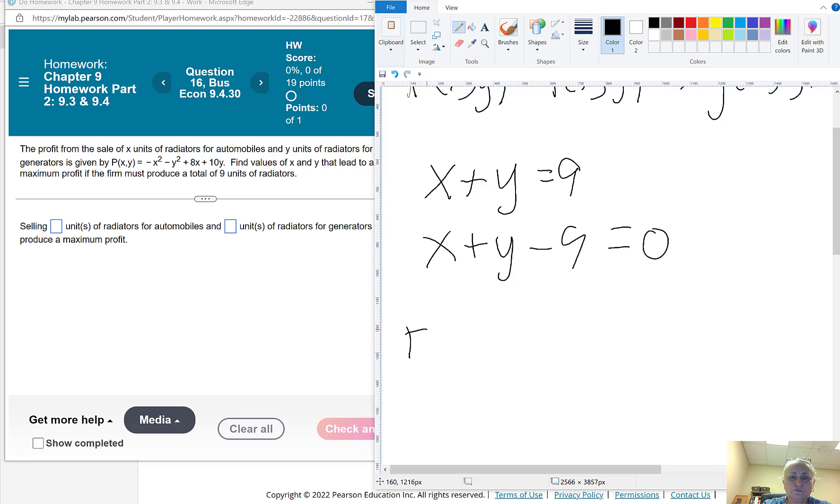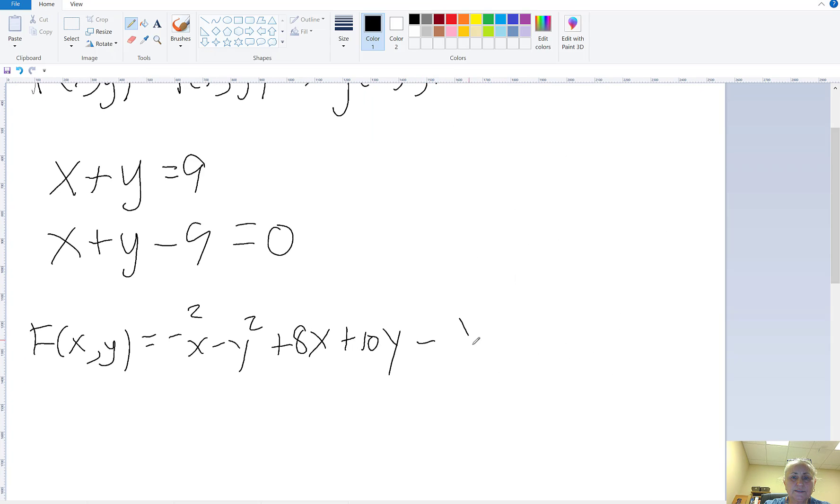That makes our Lagrange formula F(x,y) equals minus x squared minus y squared plus 8x plus 10y minus lambda times x plus y minus 9. So that's minus x squared minus y squared plus 8x plus 10y minus lambda x minus lambda y plus 9 lambda.